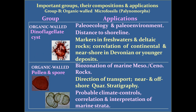The other group is organic-walled microfossils. One is dinoflagellate cysts; their paleoecology and paleoenvironment studies are very important. They show distance to shoreline, meaning the distance from the coast at which the rock was deposited. They are markers of freshwater and deltaic rocks, and correlation of continental and nearshore Devonian or younger deposits can be easily made. Another organic-walled microfossil group is pollen and spores, released in abundance. They are used in biozonation of marine Mesozoic and Cenozoic rocks, show direction of transport in near- and offshore areas, and are important in Quaternary stratigraphy for probable climate control, correlation, and interpretation of marine stratigraphy.